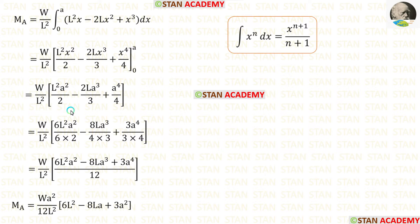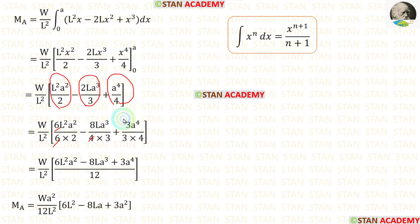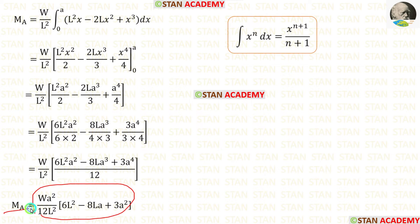Then let us take LCM, keeping 12 as LCM, so we make all denominators equal to 12. We multiply the numerator and denominator of the first term by 6, the second by 4, and the third by 3. Then we take A² and 12 outside. Finally we have derived the formula for MA.